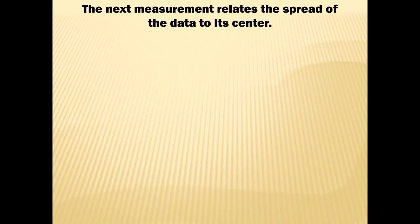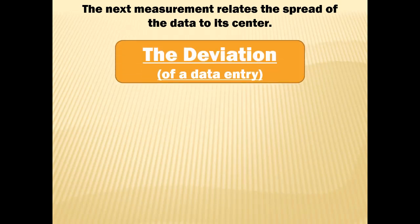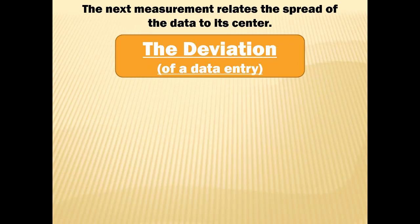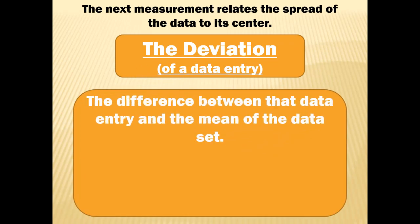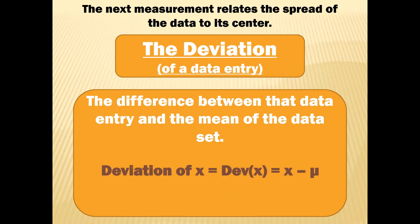The next measurement relates the spread of the data to its center, and it's called the deviation of a data entry. The deviation is the difference between that data entry and the mean of the data set. For a population: deviation of x equals x minus mu. For a sample: deviation of x equals x minus x-bar. The deviation tells you the distance between each data value and the mean.